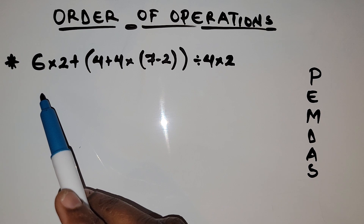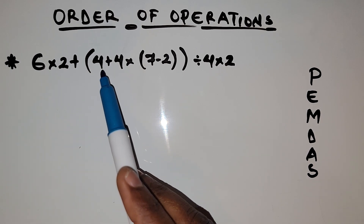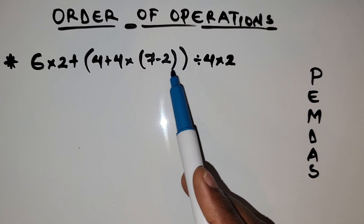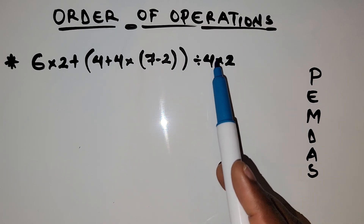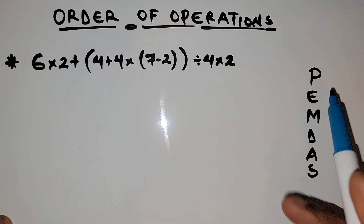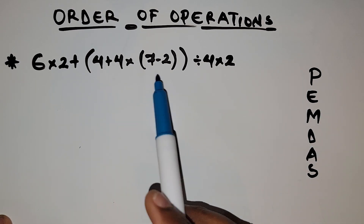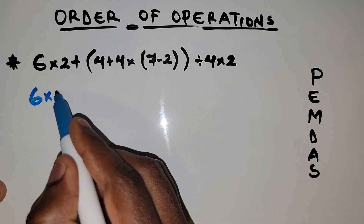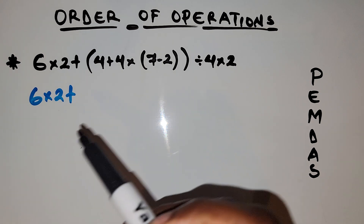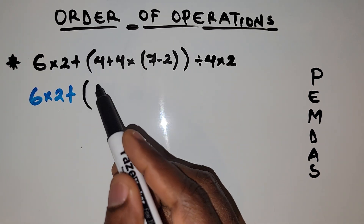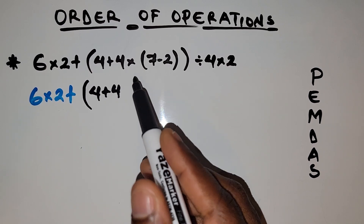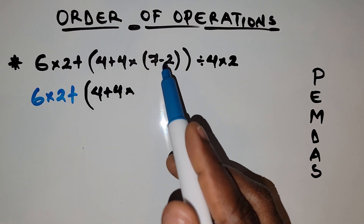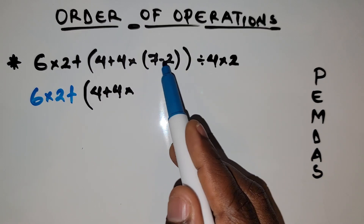So in this case, how do we solve the problem? We have 6 times 2 plus 4 plus 4 times 7 minus 2 in parentheses. The parentheses are closed, and then divide by 4 times 2. As we go by the rules, parentheses come first, so whatever is in the parentheses we want to solve first.